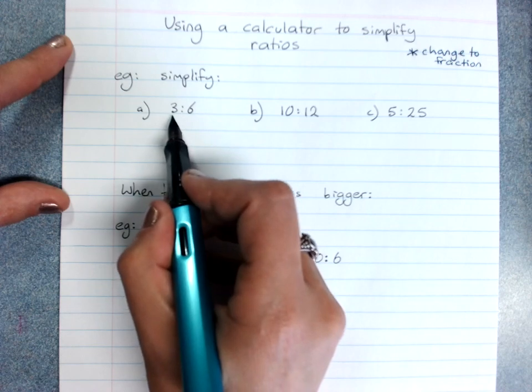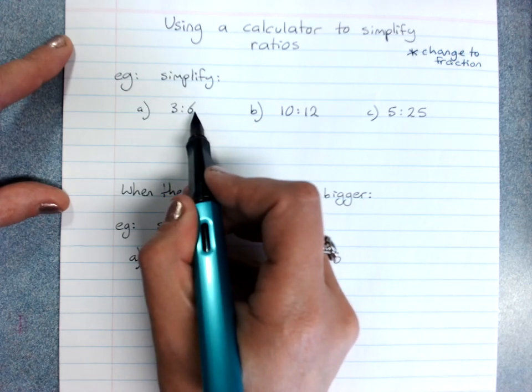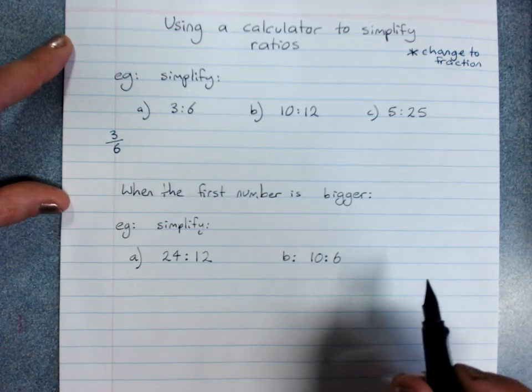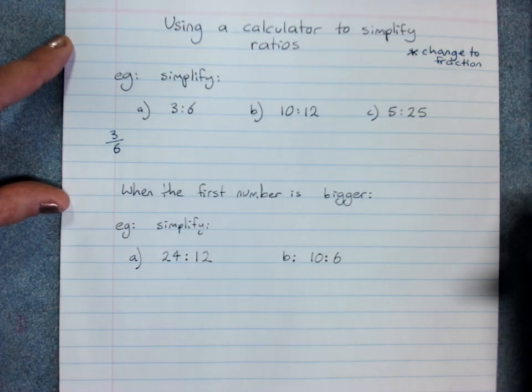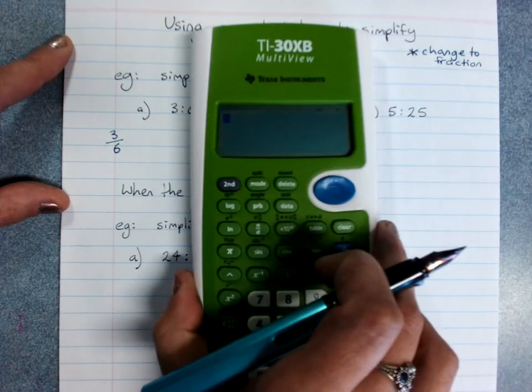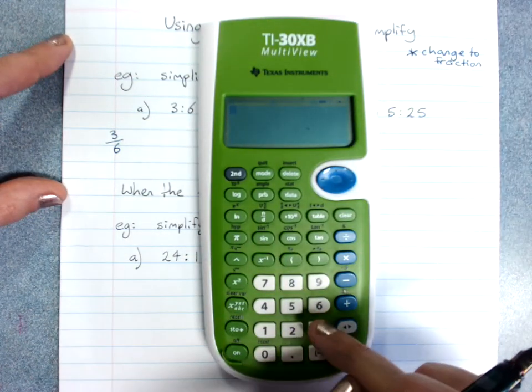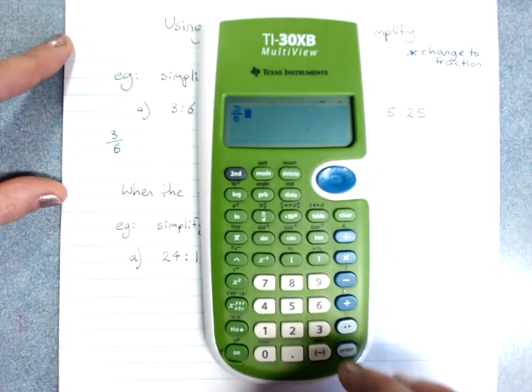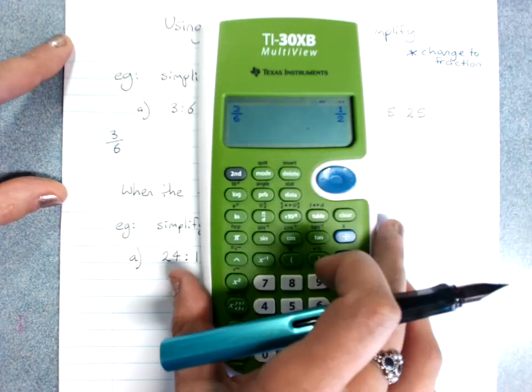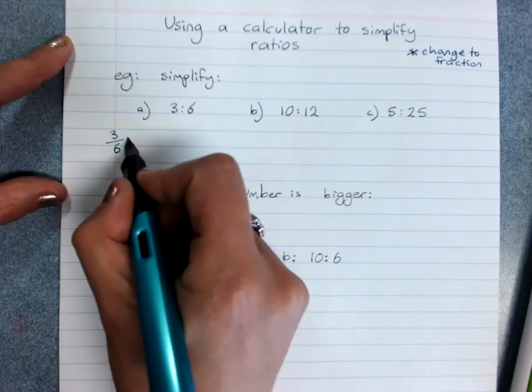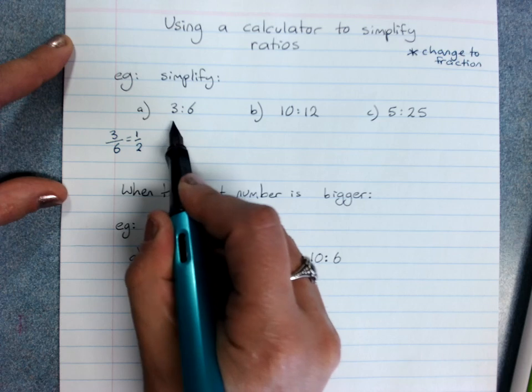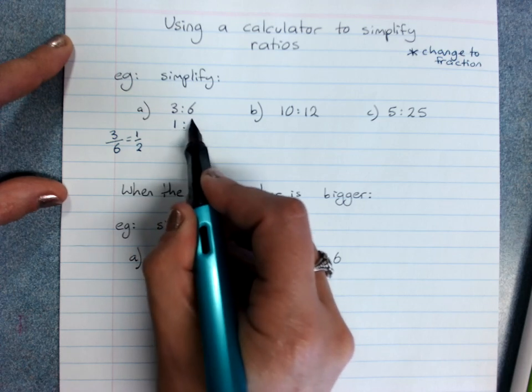So here I've got 3 to 6. If you change that to a fraction which is 3 over 6, use your calculator and the fraction key to do 3 over 6. That simplifies to 1 half and then you change it back into a ratio 1 to 2.